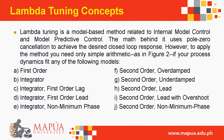Lambda tuning is a model-based method related to internal model control and model predictive control. The math uses pole-zero cancellation to achieve the desired closed loop response. To apply it, you need only simple arithmetic. Process models supported include: (A) first order, (B) integrator, (C) integrator first-order lag, (D) integrator first-order lead, (E) integrator non-minimum phase, (F) second-order overdamped, (G) second-order underdamped, (H) second-order lead, (I) second-order lead with overshoot, and (J) second-order non-minimum phase.